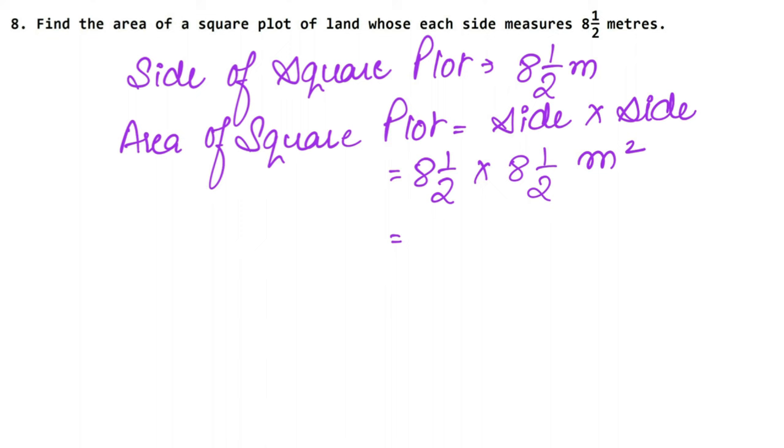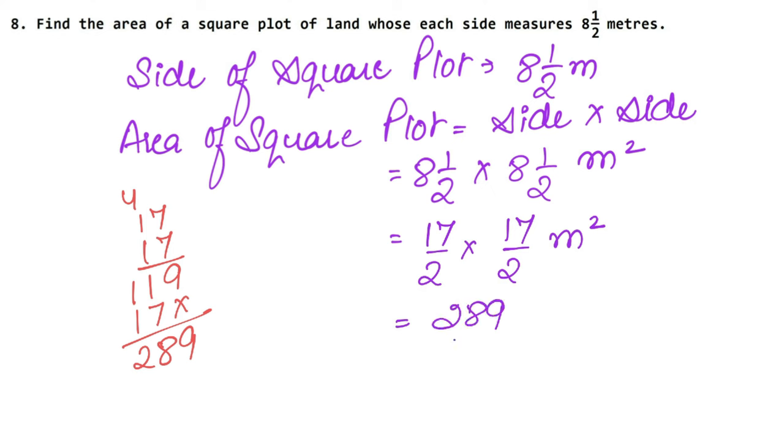Now we will change it in fractions. 2 eights is 16 plus 1 is 17, 17 upon 2 into 17 upon 2 meter square. Now 17 into 17 is 289. Now let's multiply it and see. 7 sevens is 49, 7 ones, 7 plus 4 is 11. So this is 289. So this is 289 upon 4 meter square. Now since its numerator is bigger, we will change it in mixed fraction.